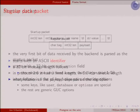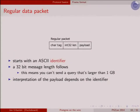A regular data packet starts with an ASCII identifier — just one byte, always 8-bit clean — and then the payload. The length field means you can't send a query larger than one gigabyte in one go, so if you have an insert statement with a huge number of values, it just won't fit in a query packet. How you interpret the payload depends on the frame type.